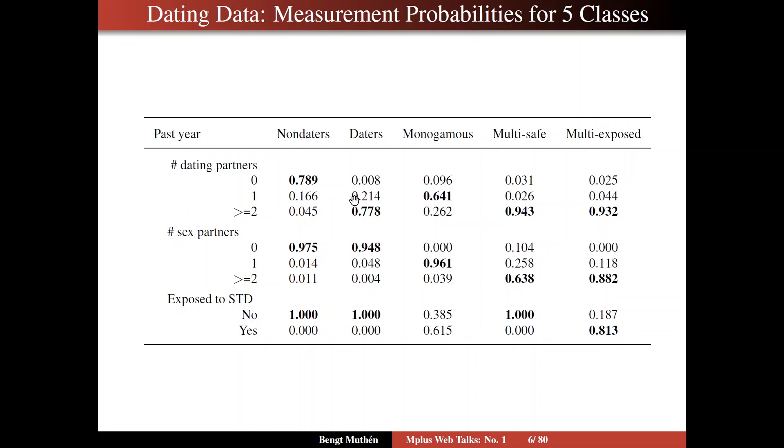In contrast, you have the daters, where you have a high probability for at least two dating partners, but zero sex partners, so just daters. And exposed to STD is no with probability one. The monogamous class is characterized by a higher probability for one dating partner and one sex partner, an ambiguous picture for the STD.